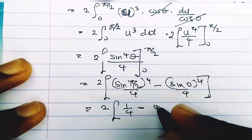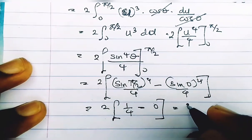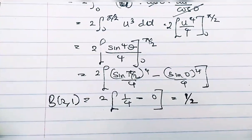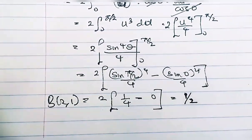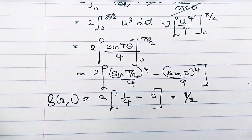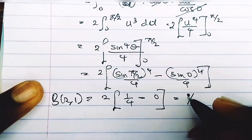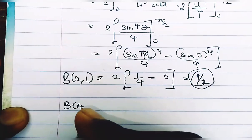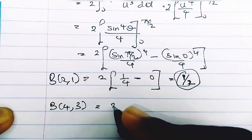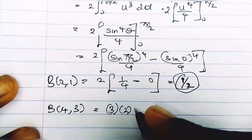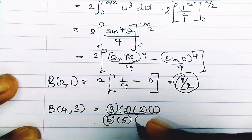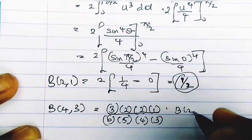So we have 2 × (1/4 − 0) = 1/2. Therefore, Beta of 2 and 1 is 1/2. Note that for any question we solve, we don't need to re-derive this — we now know B(2, 1) = 1/2 and can simply substitute it. Going back to our original question, B(4, 3) had the form [3×2×2×1] / [6×5×4×3] · B(2, 1).